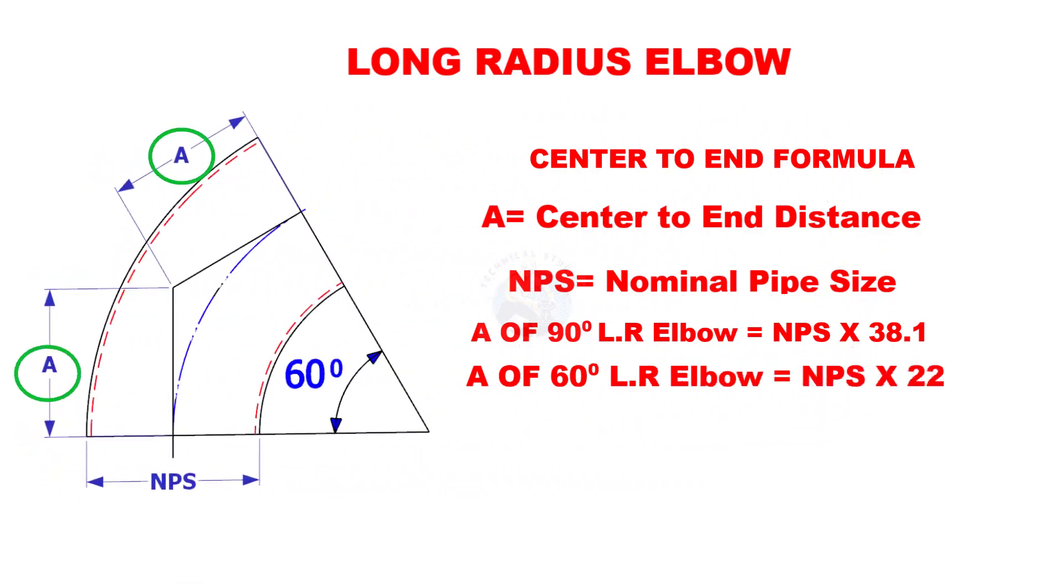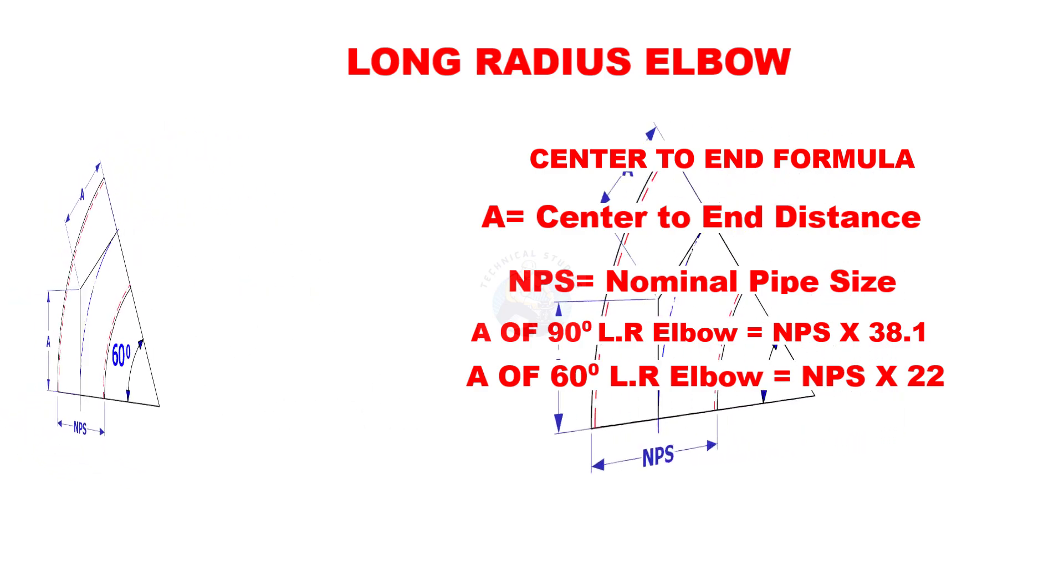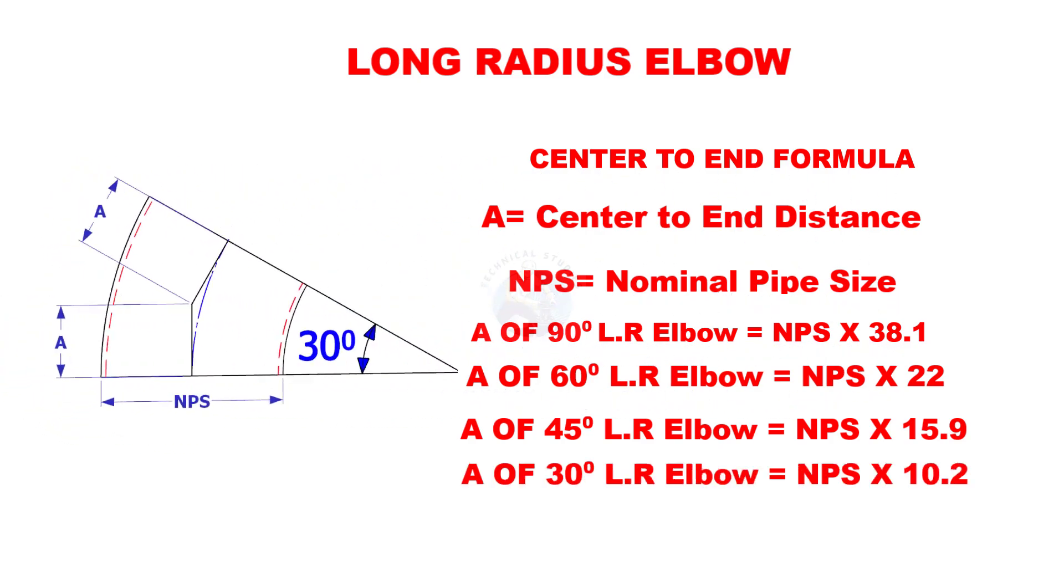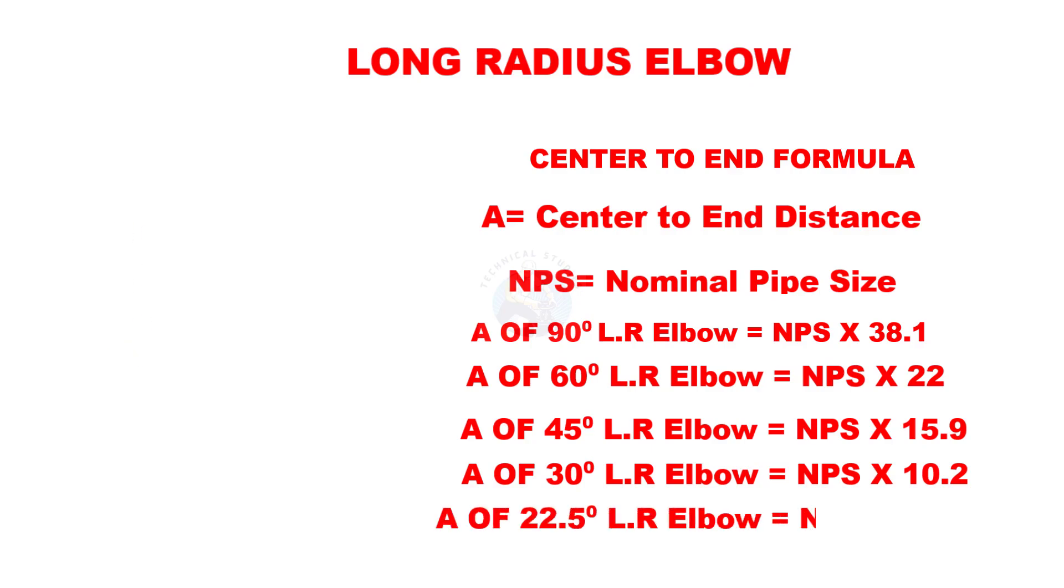A of 60 degree long radius elbow is nominal pipe size multiplied by 22. A of 45 degree long radius elbow is nominal pipe size multiplied by 15.9. A of 30 degree long radius elbow is nominal pipe size multiplied by 10.2. If the degree is 22.5, multiply the nominal size by 7.57.